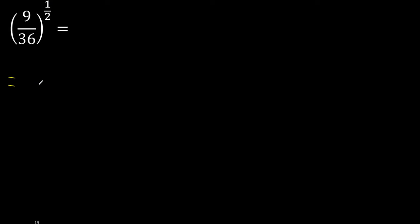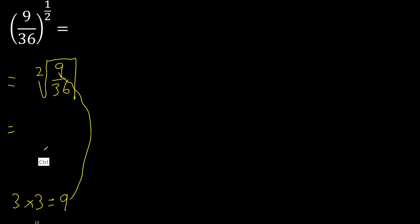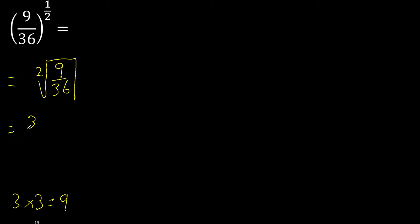Exponent fraction therefore root. Exponent is 1, therefore eliminate. 2 equal numbers that multiply to give 9 — 3 multiplied by 3 is 9 — equal numbers, therefore the answer is 3.